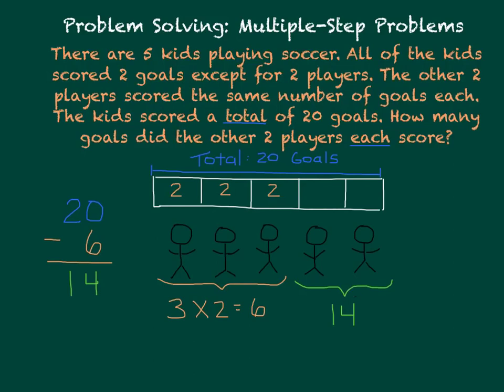So we know that these two kids scored 14 goals. How many goals did the other two players each score? We know that together they scored 14 goals. So when we divide that by each of the two players, 14 divided by 2 equals 7. They each scored 7 goals.